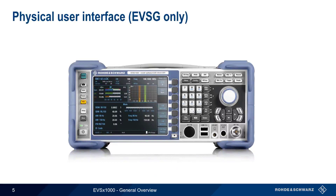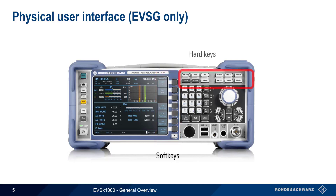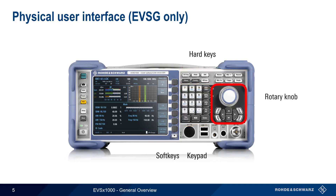The physical user interface on the EVSG1000 consists of soft keys, which map to the functions on the right side of the screen, hard keys used to access commonly used settings, and a keypad for entering numeric values. There is also a rotary knob, as well as a set of cursor keys for changing values and navigating menus. All of these functions can also be performed through the EVS's remote graphical interface.